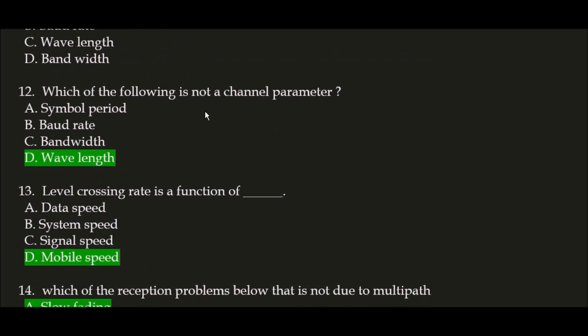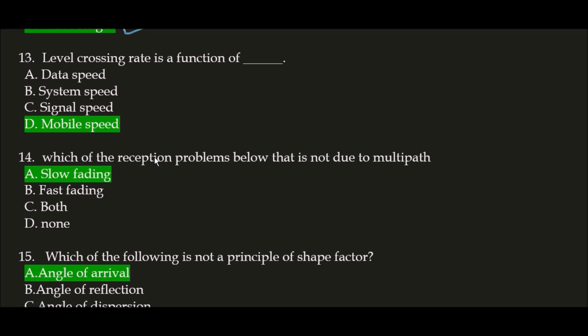Next question: which of the following is not a channel parameter? The correct answer is option D, wavelength. Wavelength is not a channel parameter. On the other hand, symbol period, baud rate, and bandwidth are all channel parameters. Next question: level crossing rate is a function of mobile speed. The LC rate is a function of mobile speed.